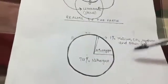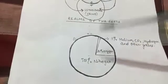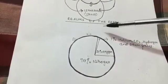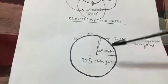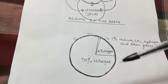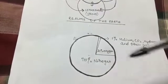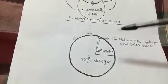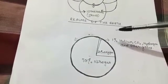As there is no distinct boundary between the atmosphere and the outer space, its exact thickness cannot be known. Approximately the atmosphere extends up to 1600 kilometers above the surface of the earth.